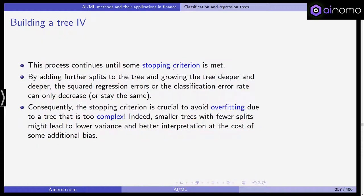This continues until some stopping criterion is met. For example if you believe the classification rate error has been minimized in a sufficient way. By adding further splits to the tree, by going down further and growing the tree deeper, the squared regression errors or the classification error rate can only decrease or it can stay virtually the same. Problem is that this leads to overfitting.